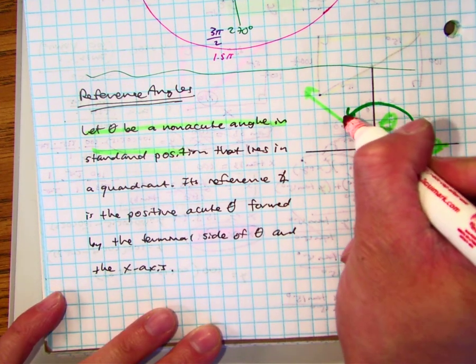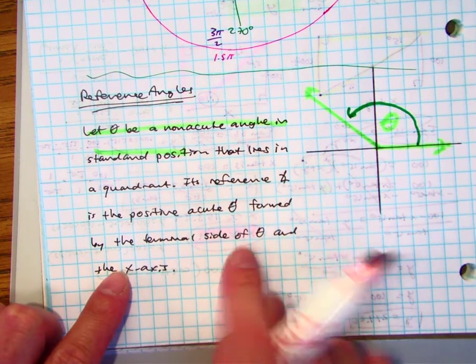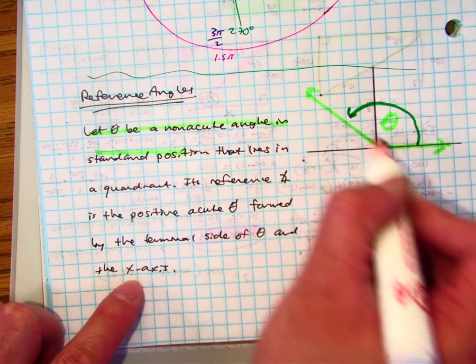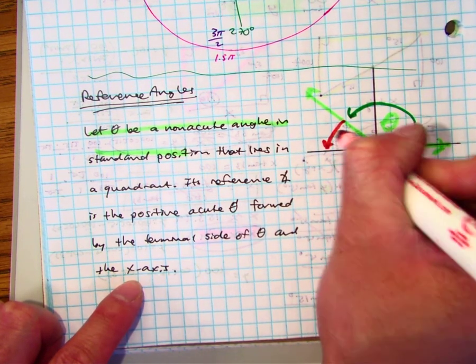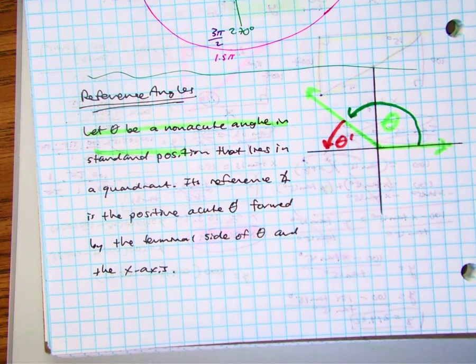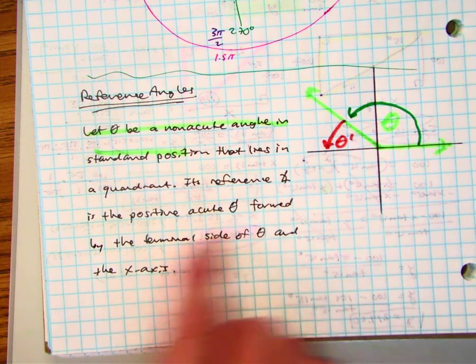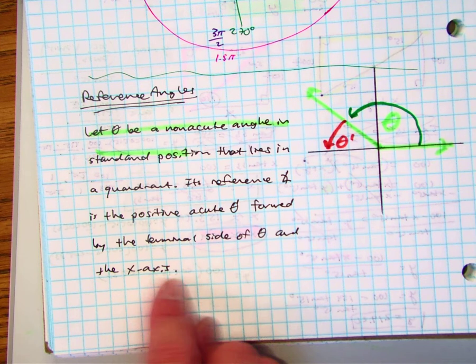This angle is formed by the terminal side—the side that you've ended with. We continue on and call this theta prime. Everyone say theta prime. It's formed by the terminal side of theta and the x-axis.